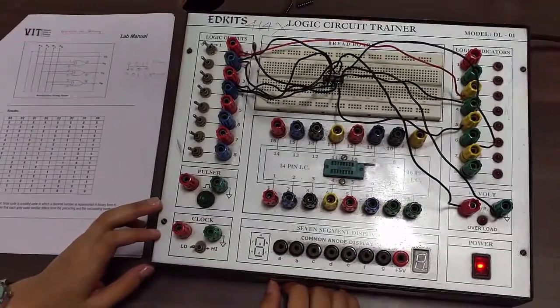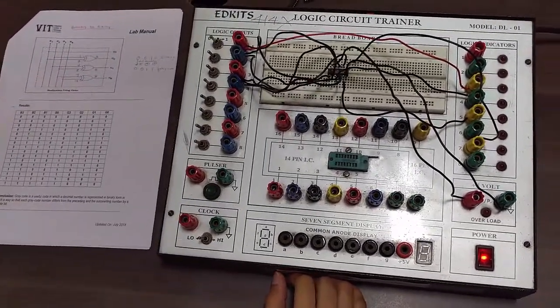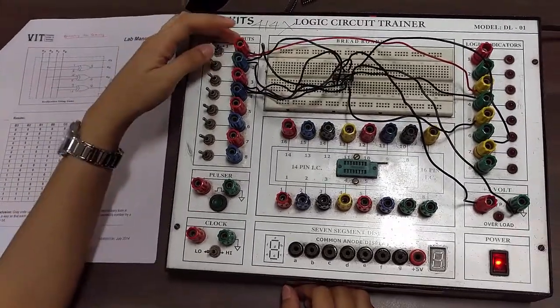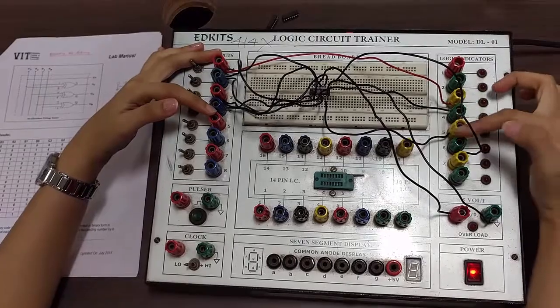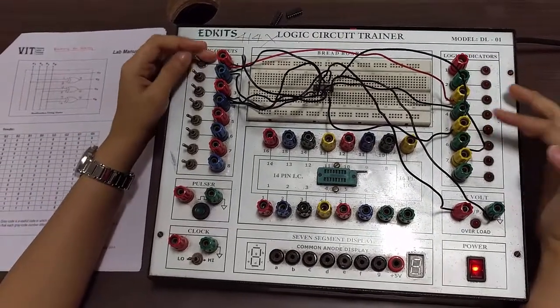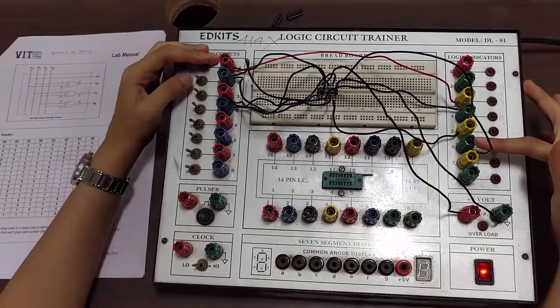We have assembled the circuit as discussed before. Now let's check the output. This is B3, B2, B1, B0, and this is G3, G2, G1, G0. First we are giving 0000. For that we are getting 0000 only.